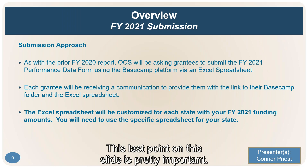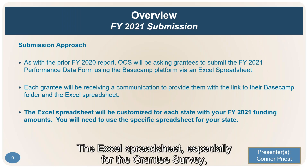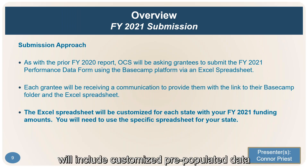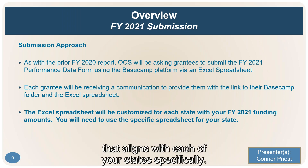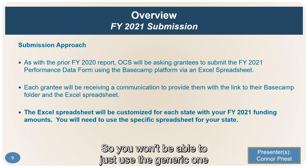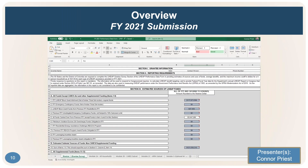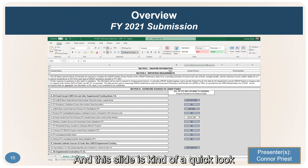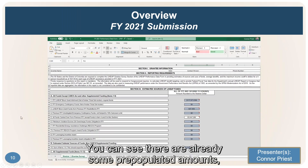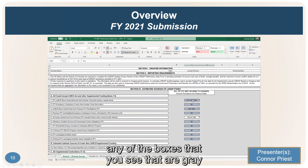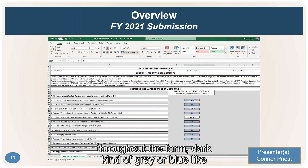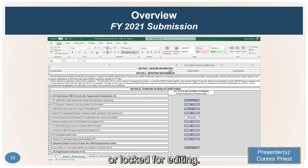An important point: the Excel spreadsheet, especially for the Grantee Survey, will include customized pre-populated data that aligns with each state specifically. You won't be able to use the generic example — you'll have to use the specific sheet in Basecamp for your state. Any boxes that are dark gray or blue throughout the form are the ones that have been pre-populated or locked for editing.